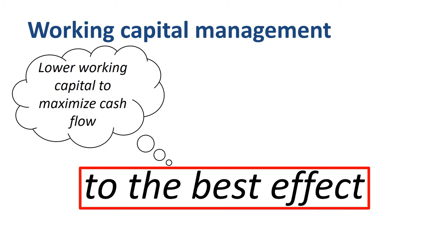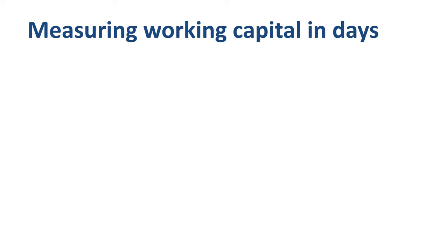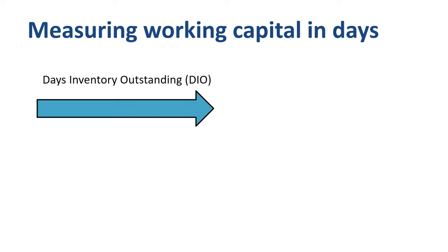What are some ways to lower working capital to maximize cash flow? To measure working capital in an easy-to-understand way, most companies look at the number of days rather than absolute amounts, to make working capital a topic that both finance and operational people understand and influence. The operating cycle for a lot of product-based companies starts with inventory, measured as days inventory outstanding (DIO). For example, a company might have 50 days worth of inventory.